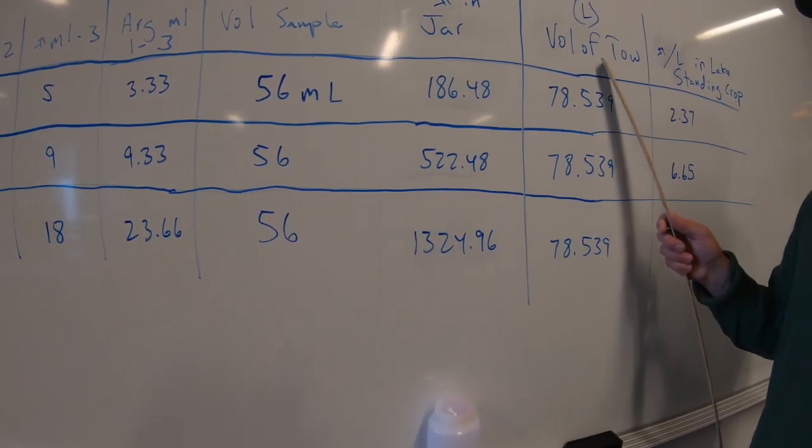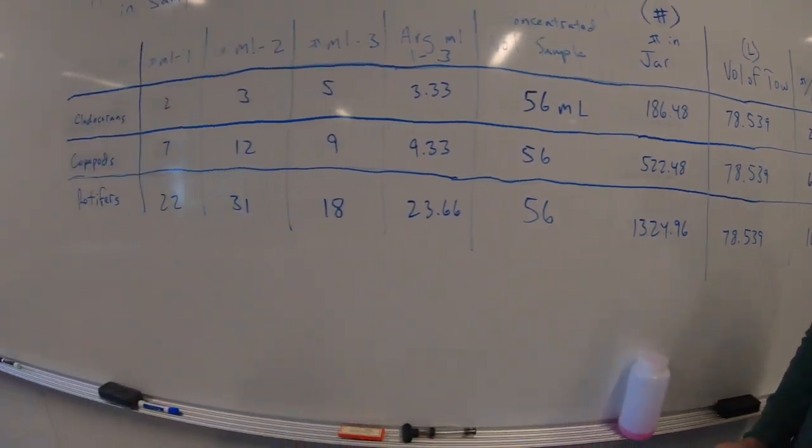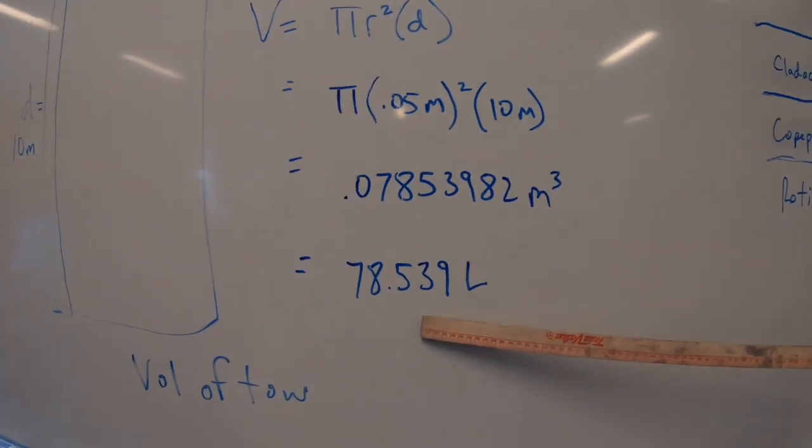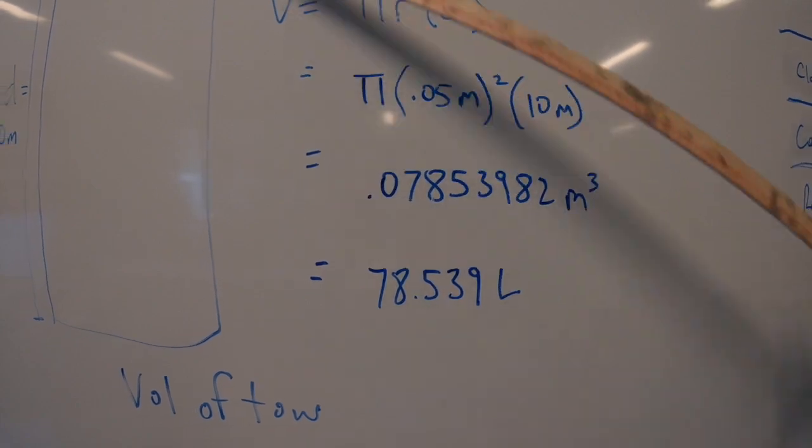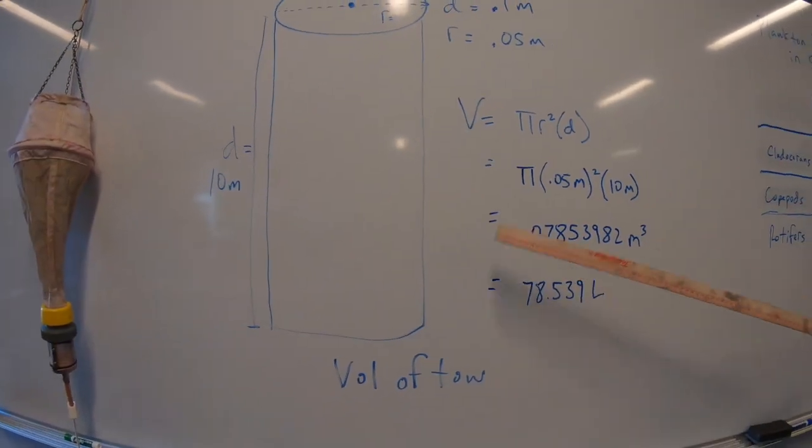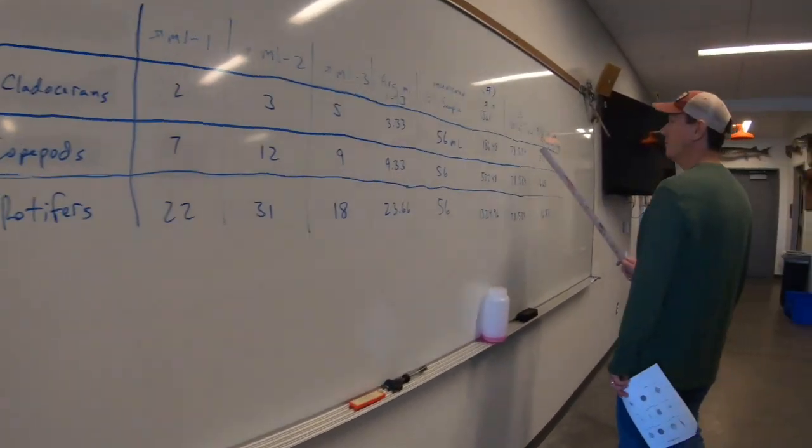Now we need the volume of the tow. So going back to our original example over here, we need this 78.539, which represents the volume of this whole tow. We put that number over here.